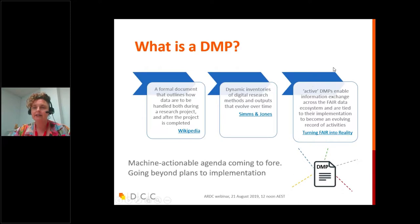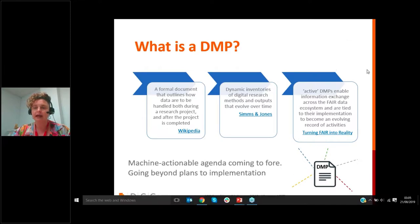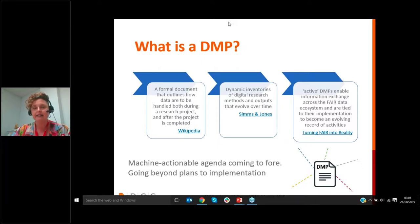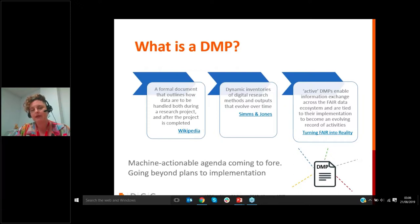A third definition comes from the 'Turning FAIR into Reality' report, which talks about DMPs being active and enabling information exchange across different tools within the system, and that we tie the DMP to its implementation. Really what we're seeing in terms of the definitions is that this machine actionable agenda is coming more to the fore — people are thinking about data management plans beyond just being a document, something that is tied to the implementation of a plan that evolves.